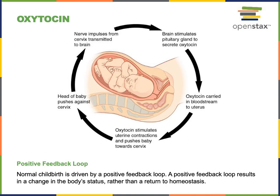Oxytocin then binds to receptors on smooth muscle cells in the myometrium, stimulating contraction of the uterus, pushing the baby towards the cervix, which creates an even greater stretching of the cervix, activating even more secretion of oxytocin in a positive feedback loop until the baby is born.